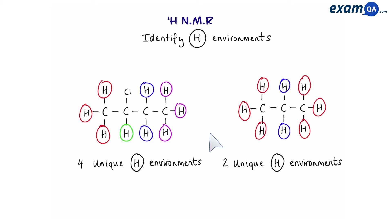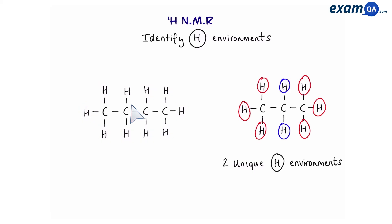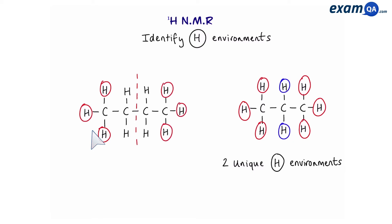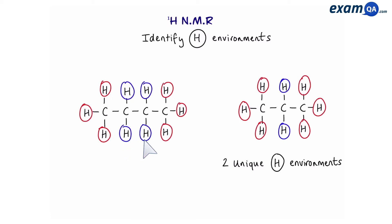Looking at the molecule on the left, what would happen if I change this chlorine to a hydrogen? Now there's going to be a line of symmetry down the middle. That means these three protons and these three protons make one environment, and these two and these two make another environment. So in total we have two unique environments — six protons in the red environment and four protons in the blue environment.